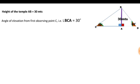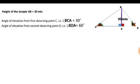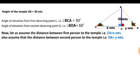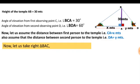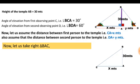Angle of elevation from first observing point C, that is angle BCA, equals 30 degrees. Angle of elevation from second observing point D, that is angle BDA, equals 60 degrees. Assume the distance from the first person to the temple, CA, equals X meters, and the distance from the second person to the temple, DA, equals Y meters. Now let us take right triangle BAC, where AB equals 30 meters and the angle of elevation is 30 degrees.